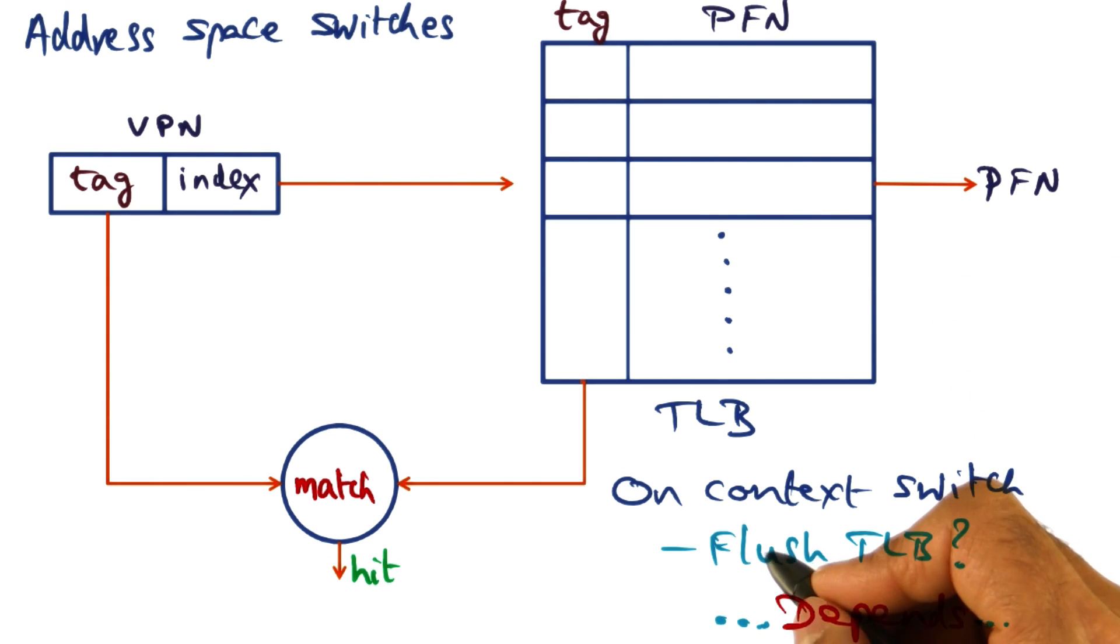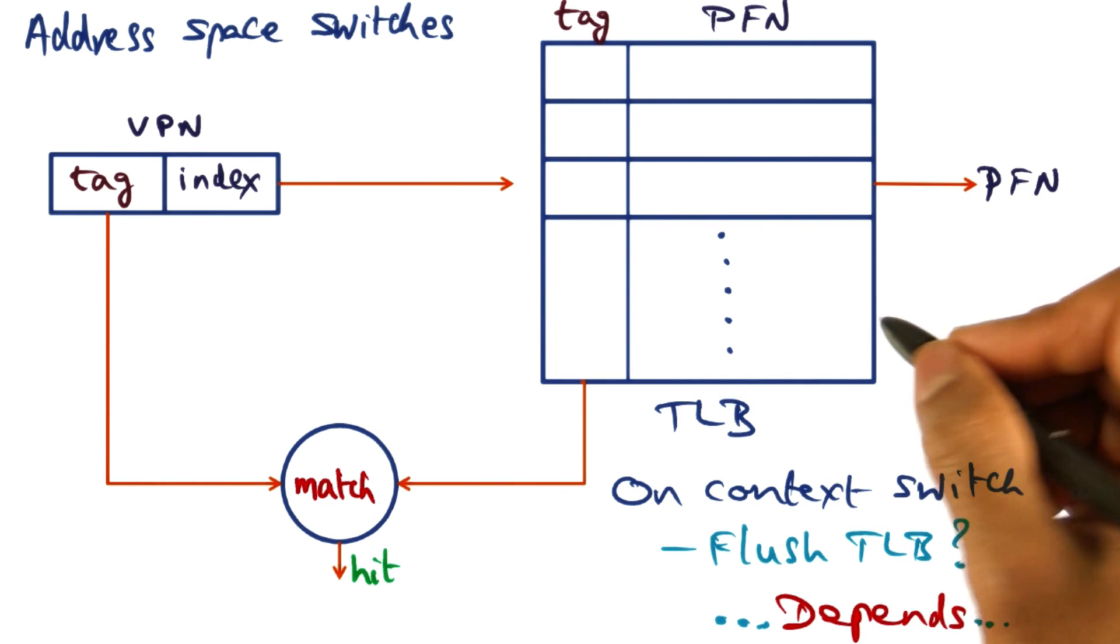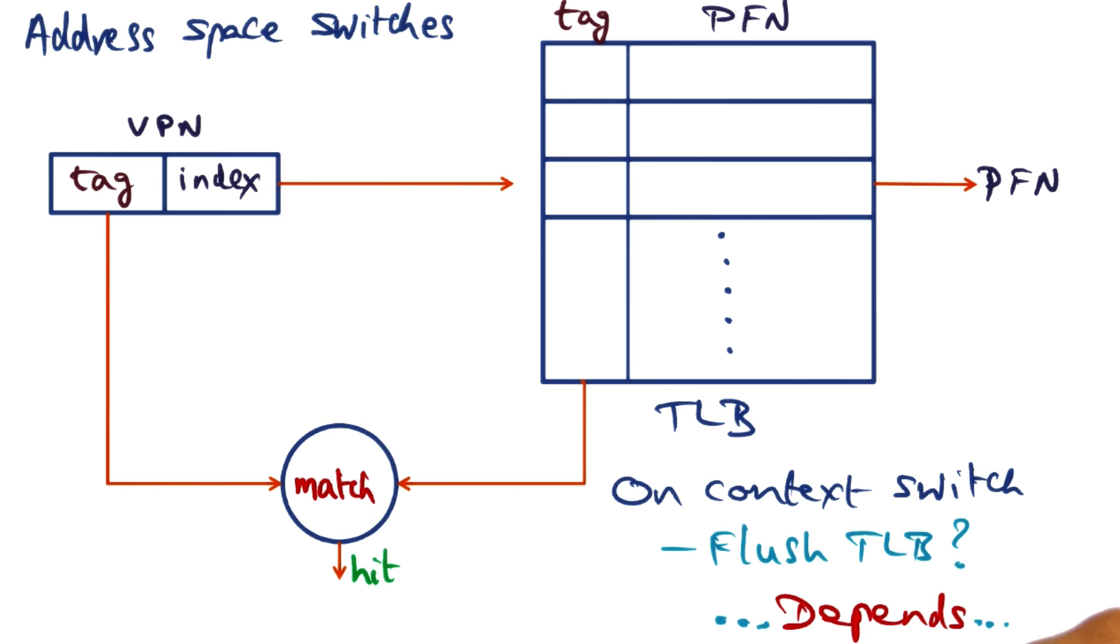The answer to the question, do we have to throw away the mappings that exist in the TLB when we do a context switch is depends.